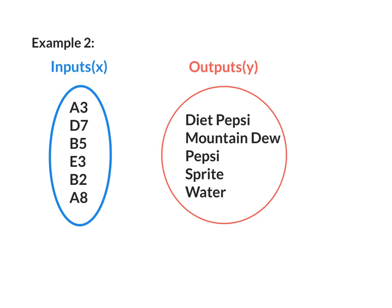Example 2. Let's consider this. If I press A3, I get a Diet Pepsi. But sometimes, I might press A3, and I'll get a Mountain Dew. That's not going to make it a function. Because the input A3 has an output of Diet Pepsi, but the input A3 also has an output of Mountain Dew. Because it has different outputs for the same input, it is not a function.